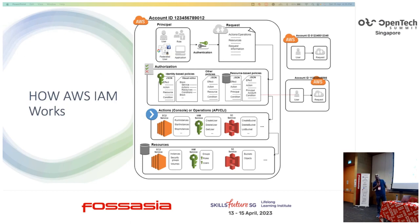Now, coming to a real case — when we create an AWS account, we will first have principals. The principal will make a request to access certain services. When the request happens, we go to the authorization.